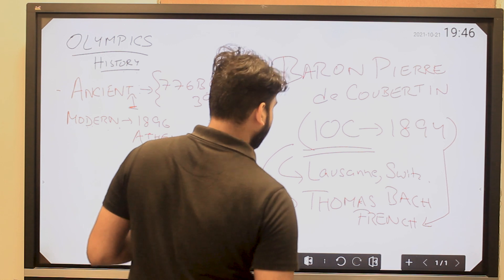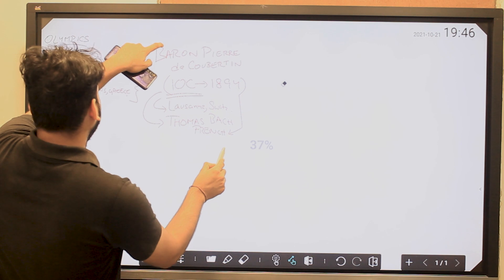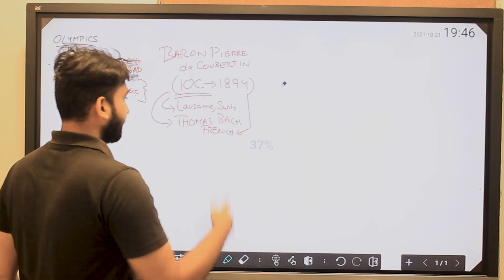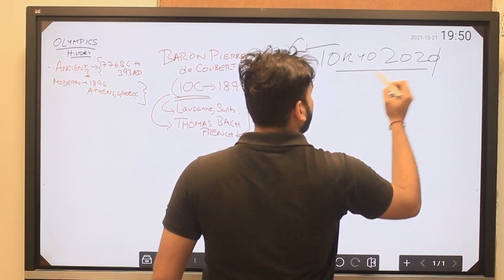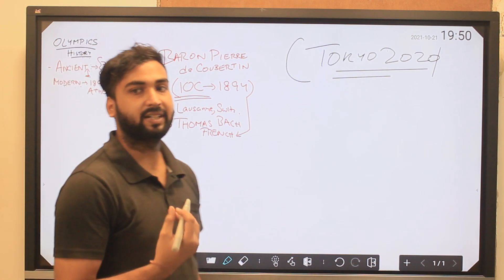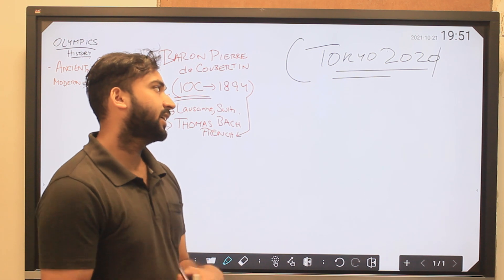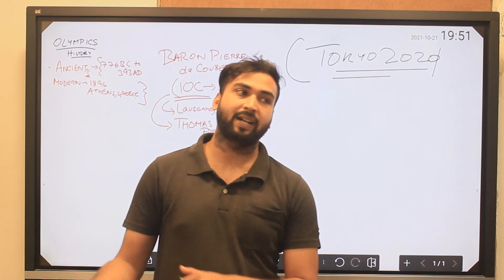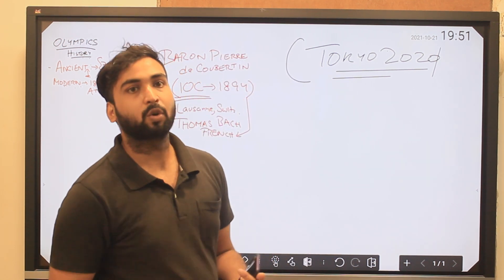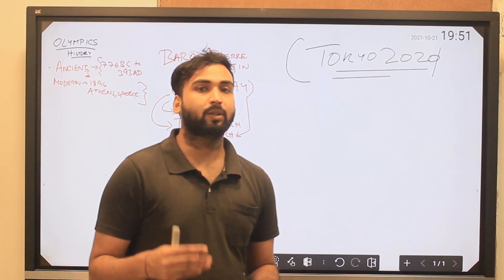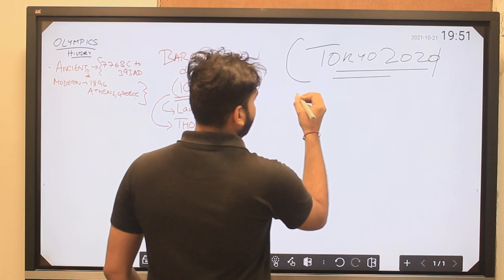These are the important things regarding the history of the Olympics. When we talk about Tokyo 2020, we need to know about games that were postponed or cancelled previously. There is no Olympics that was postponed earlier, but three editions were cancelled.